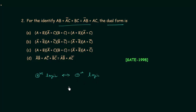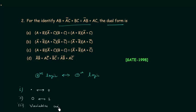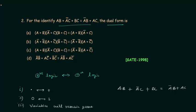What are the steps involved in calculating the dual form? First, replace the AND operator with OR and the OR operator with AND. Second, replace 0 with 1 and 1 with 0. Third, and most importantly, keep all variables as they are — the variables remain the same. The given function is: (a AND b) OR (a complement AND c) OR (b AND c) equals (a complement AND b) OR (a AND c).